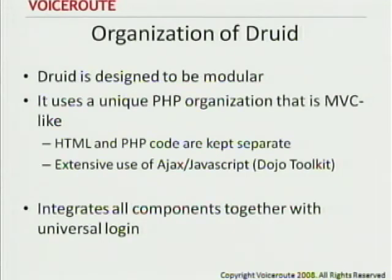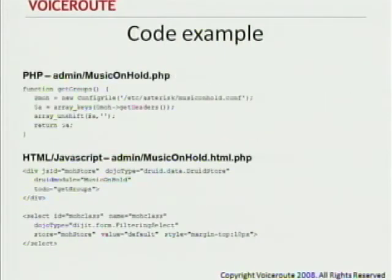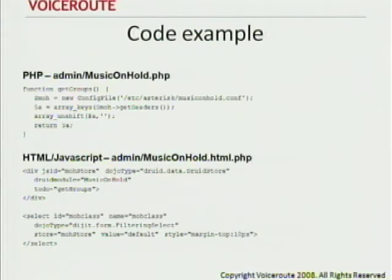Let me briefly get into the organization of Druid. Druid is designed to be very modular. It uses a unique PHP organization that's very MVC-like, so if any of you know PHP it should be straightforward. It uses a lot of Ajax and JavaScript, and all components are integrated together using Universal Login. In this code example, note this Druid module and this to-do — this Druid module corresponds to a class and a function call. It's very MVC-like, pretty much Dojo Toolkit, so if you're familiar with that, take a look.